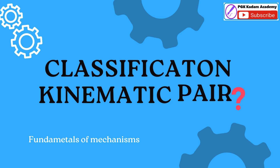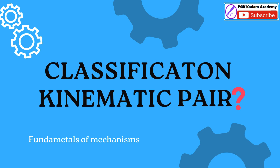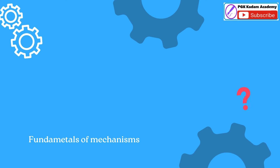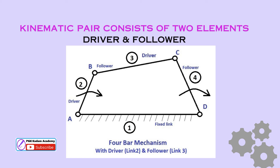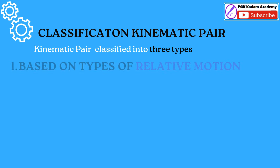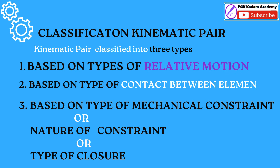Classification of Kinematic Pairs: The classification of Kinematic Pairs refers to categorizing the various types of connections between driver and follower components in a mechanism. Kinematic Pairs are classified into three types.